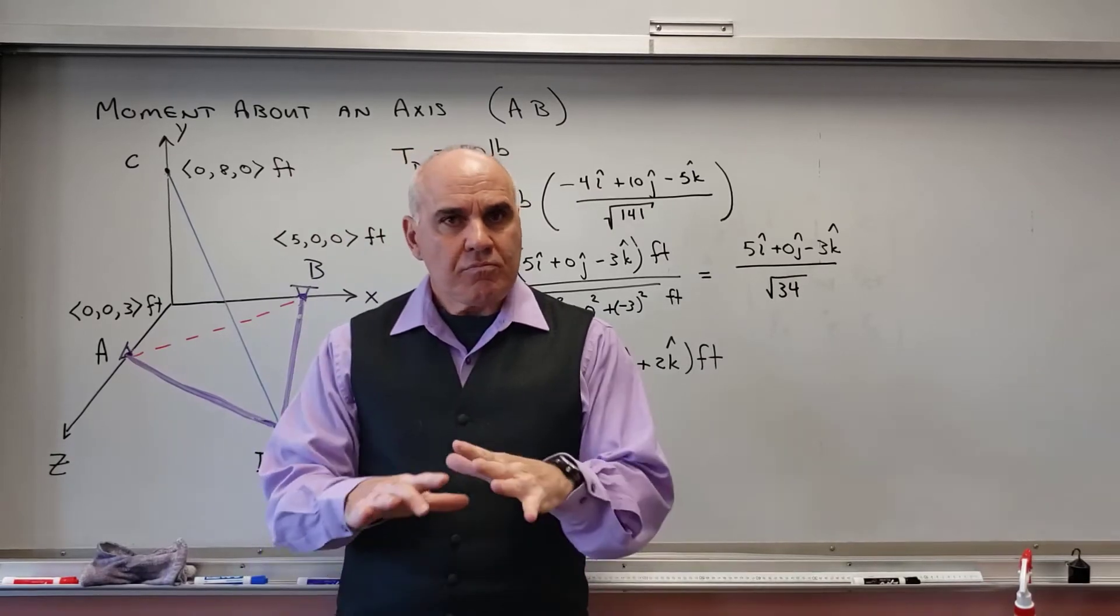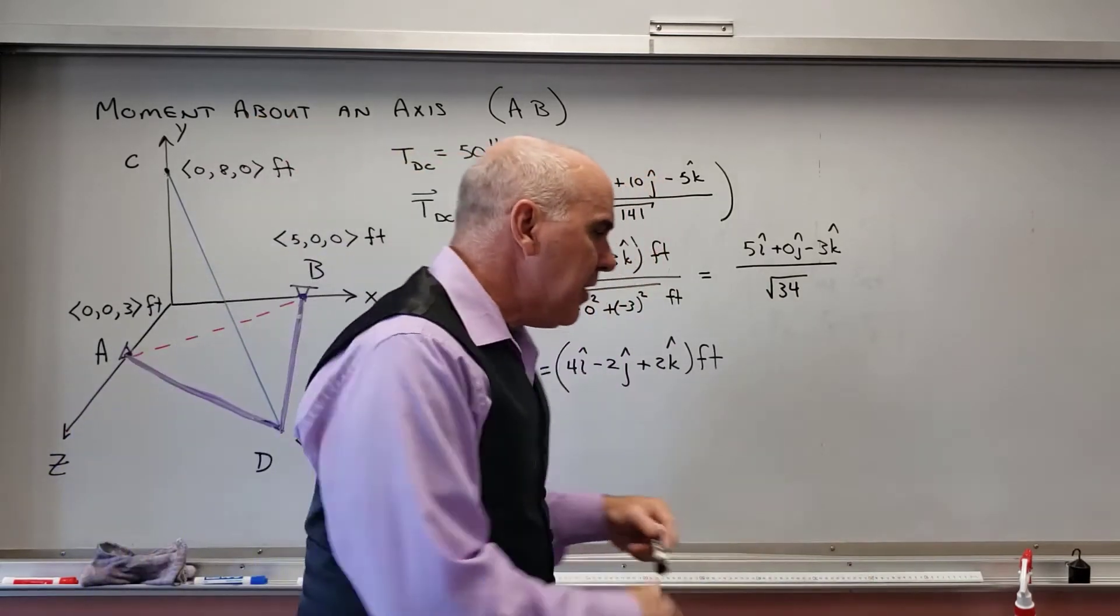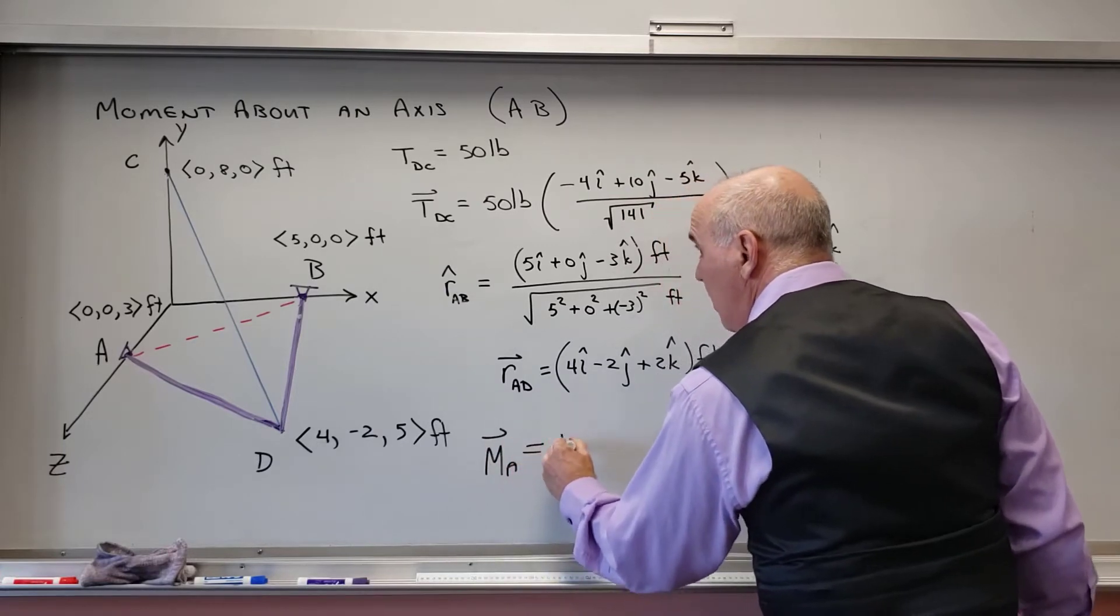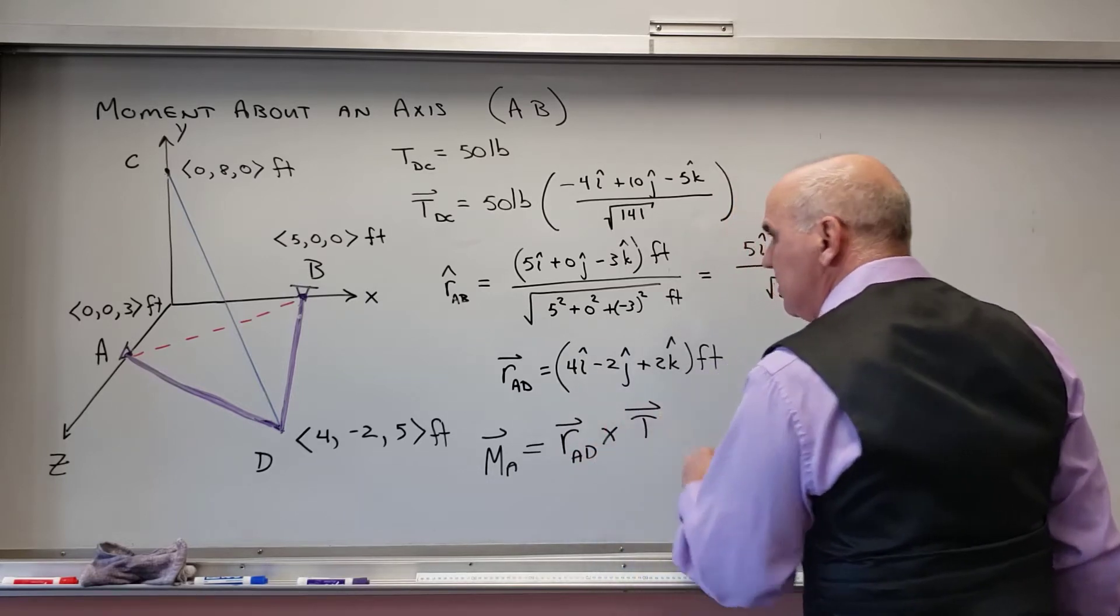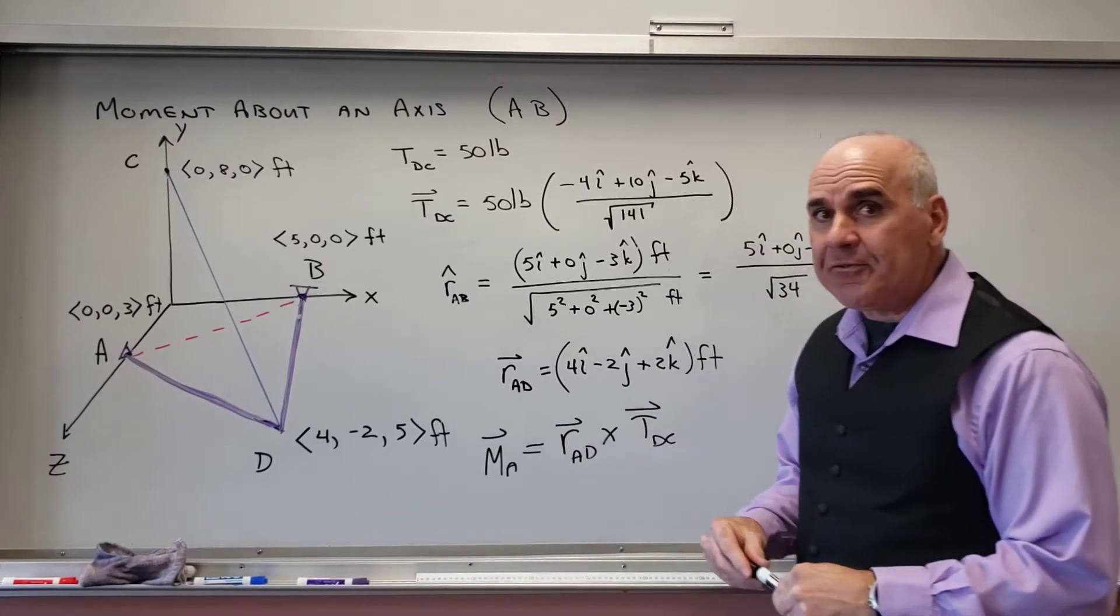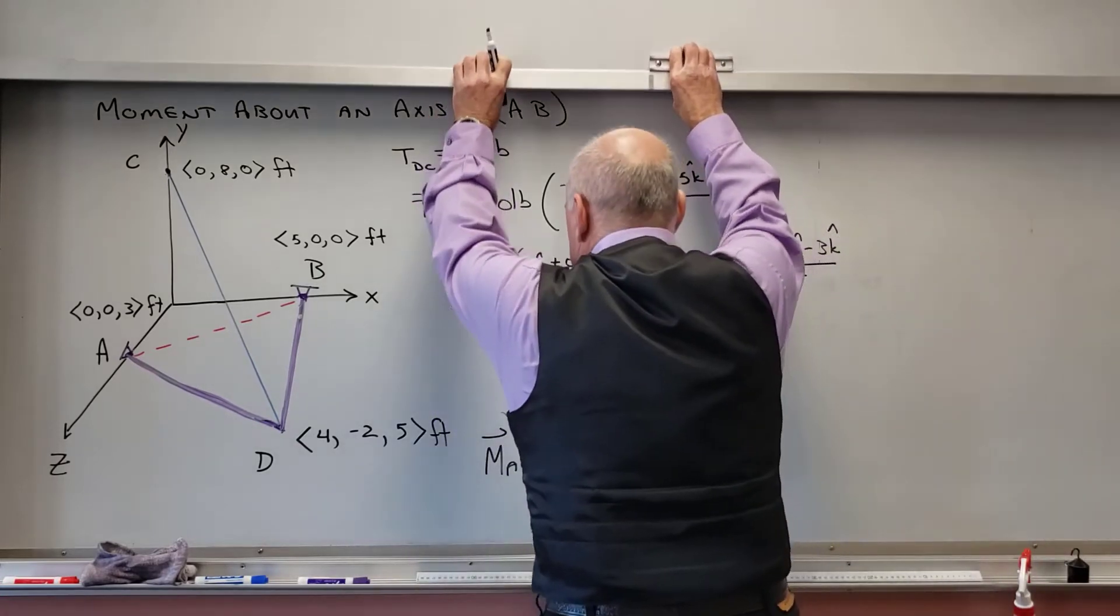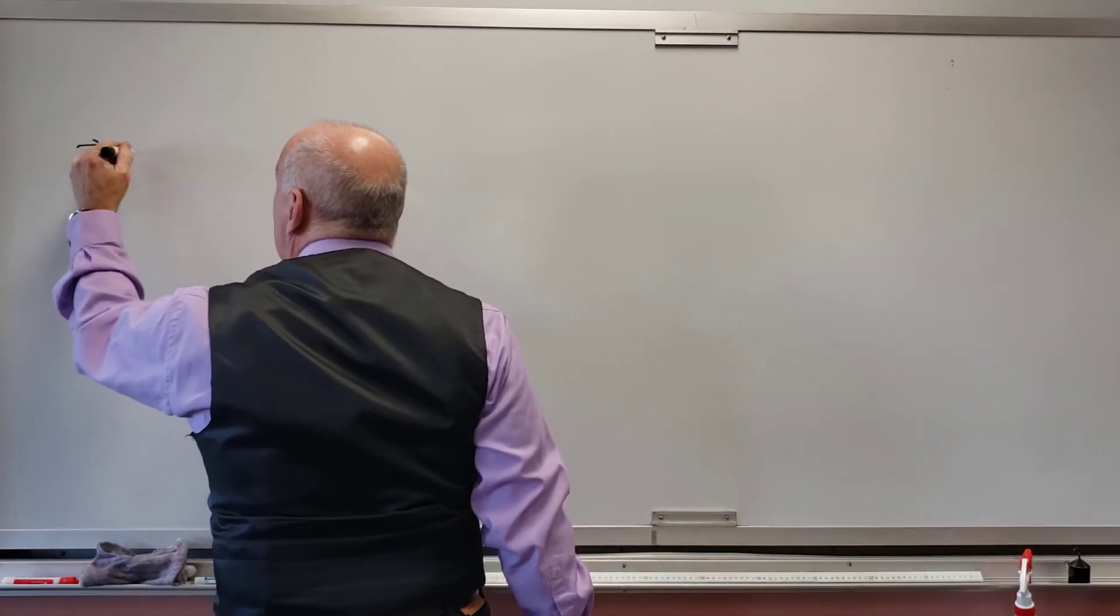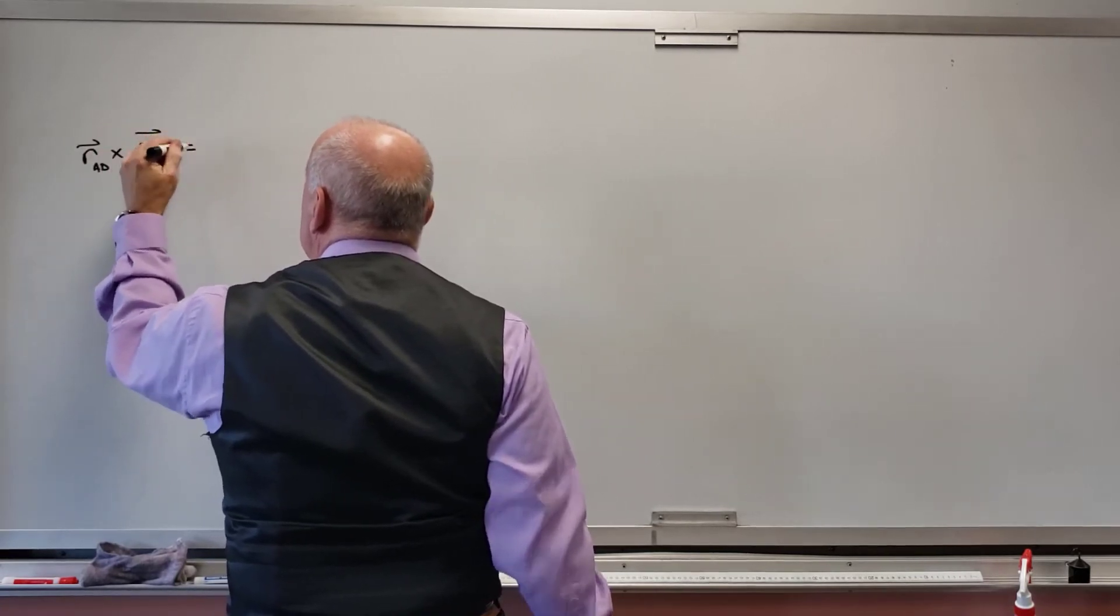So let's figure out the moment for starters. So again, it's going to be the moment about A. The moment about A is equal to R_AD crossed with the tension. And I'll even call that T_DC. So that's what I need. I need to do that first thing. I'm going to find this moment. So let's do that.